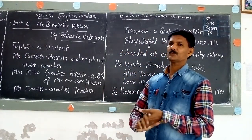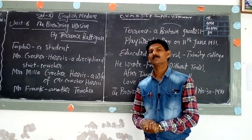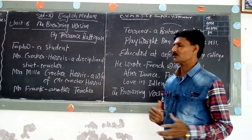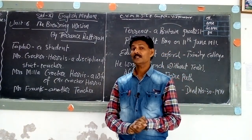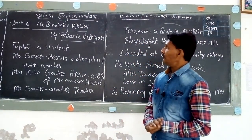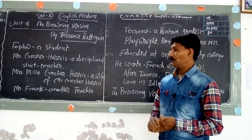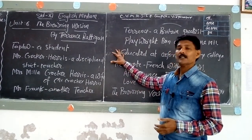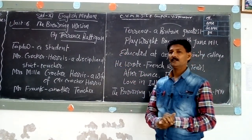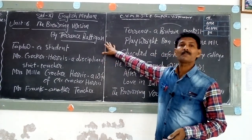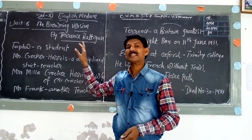Good morning and welcome to our e-learning classes of CVM Higher Secondary English Medium School. Today for Standard 11 English Medium, we are presenting a new topic — new chapter, Unit 6, The Browning Version by Terence Rattigan.